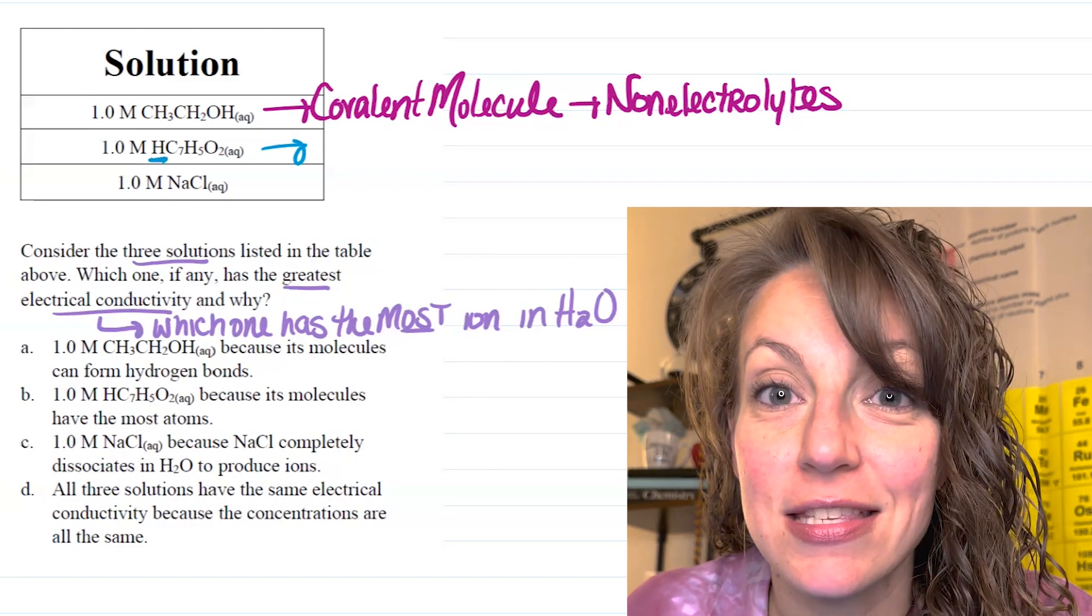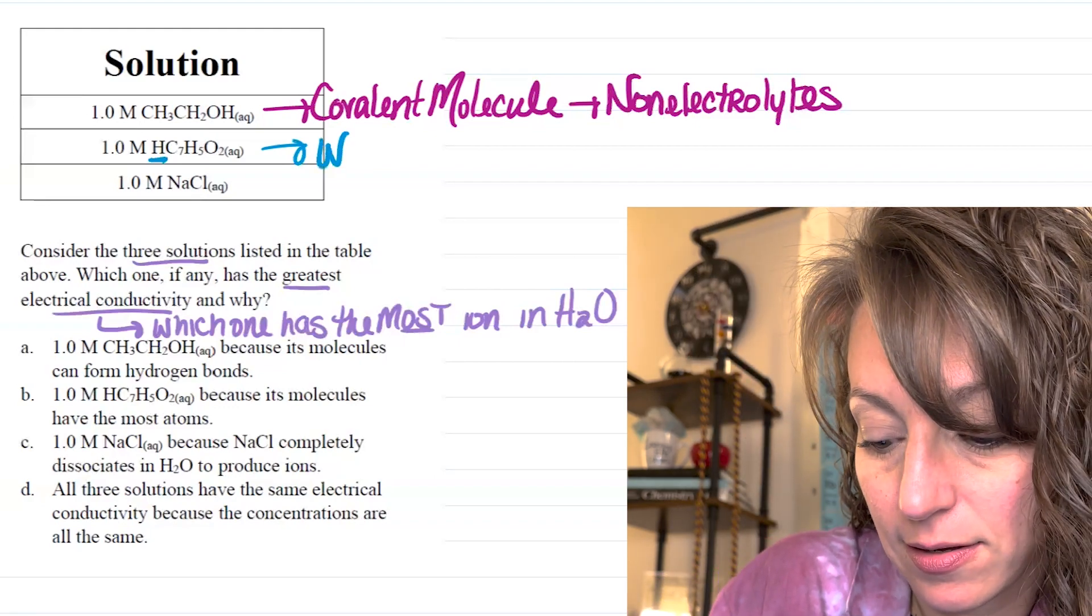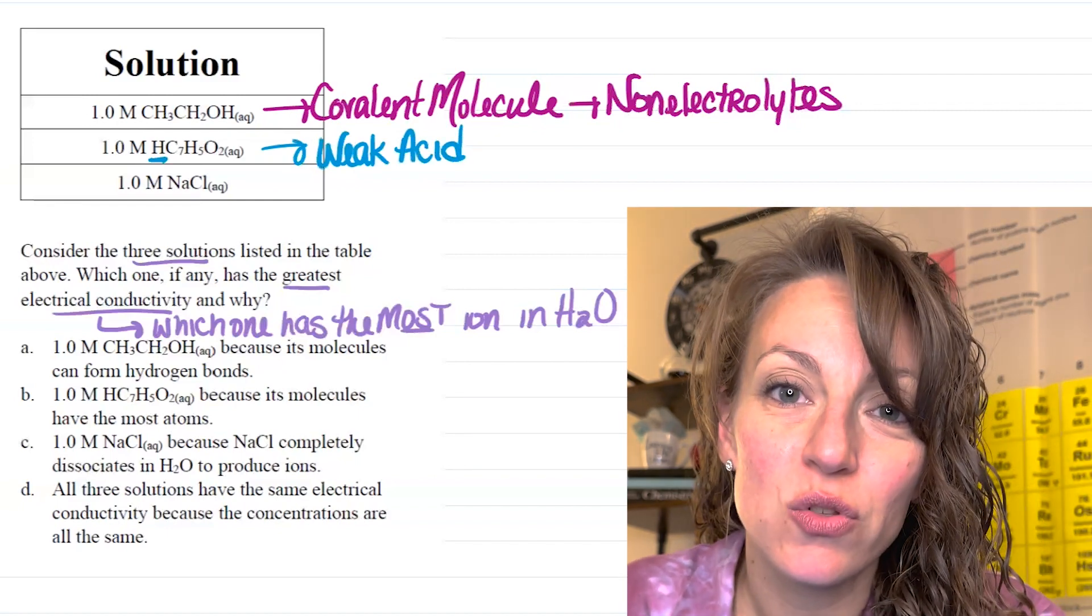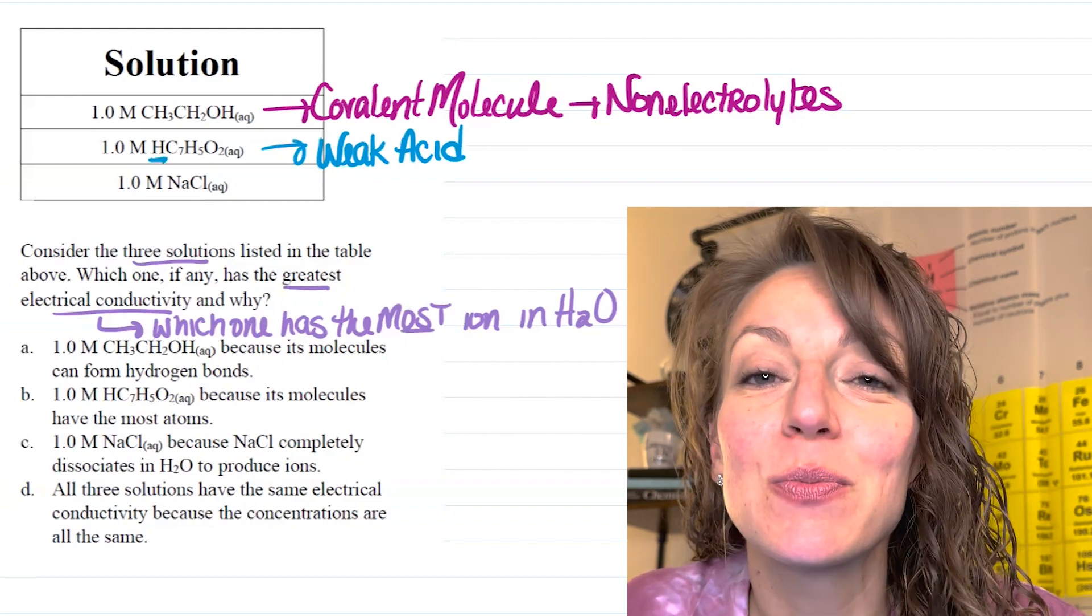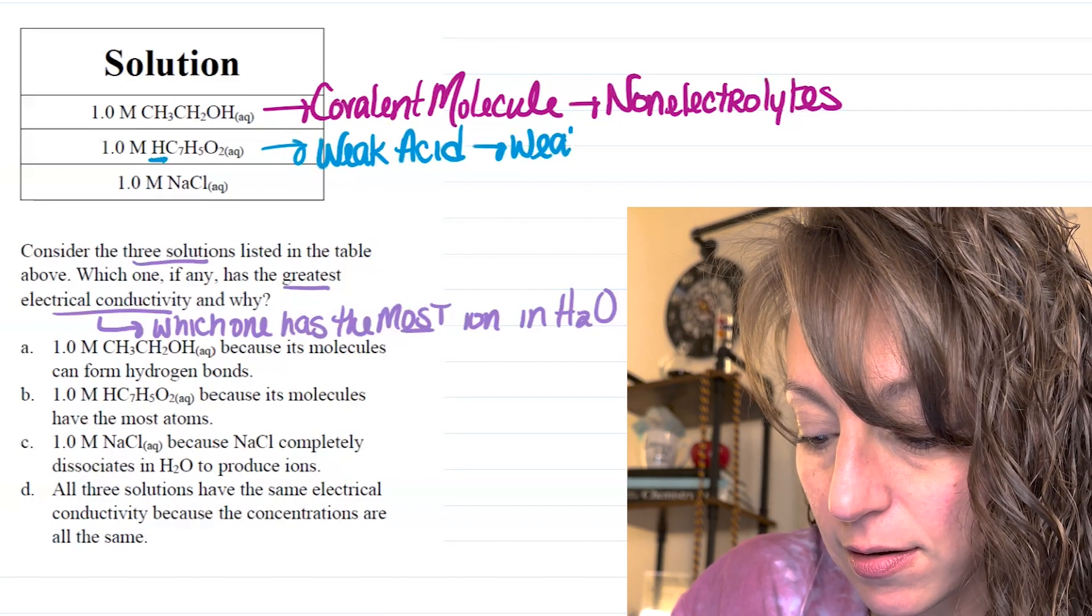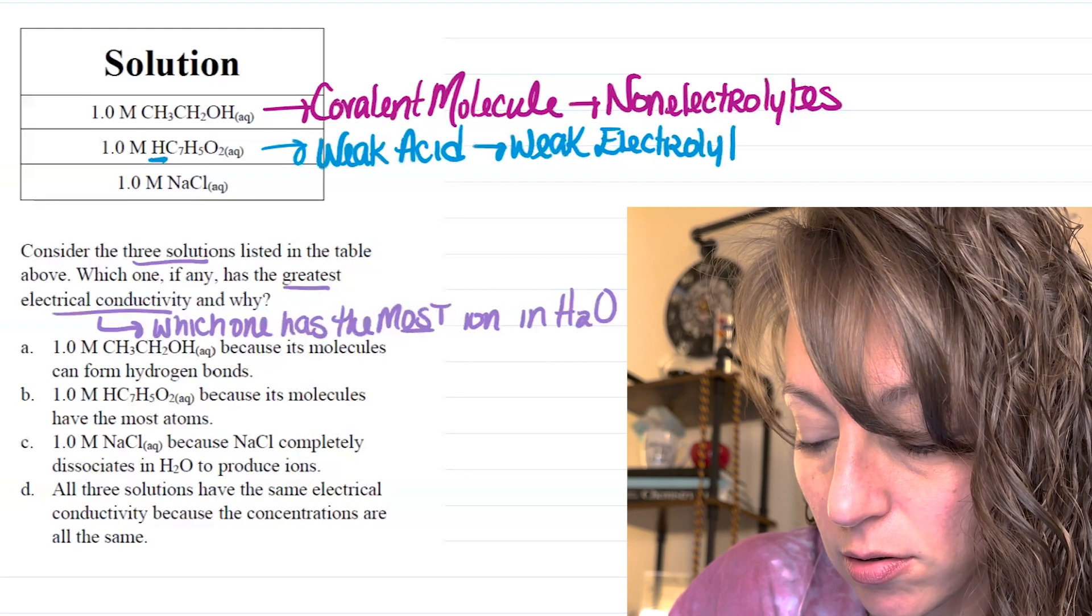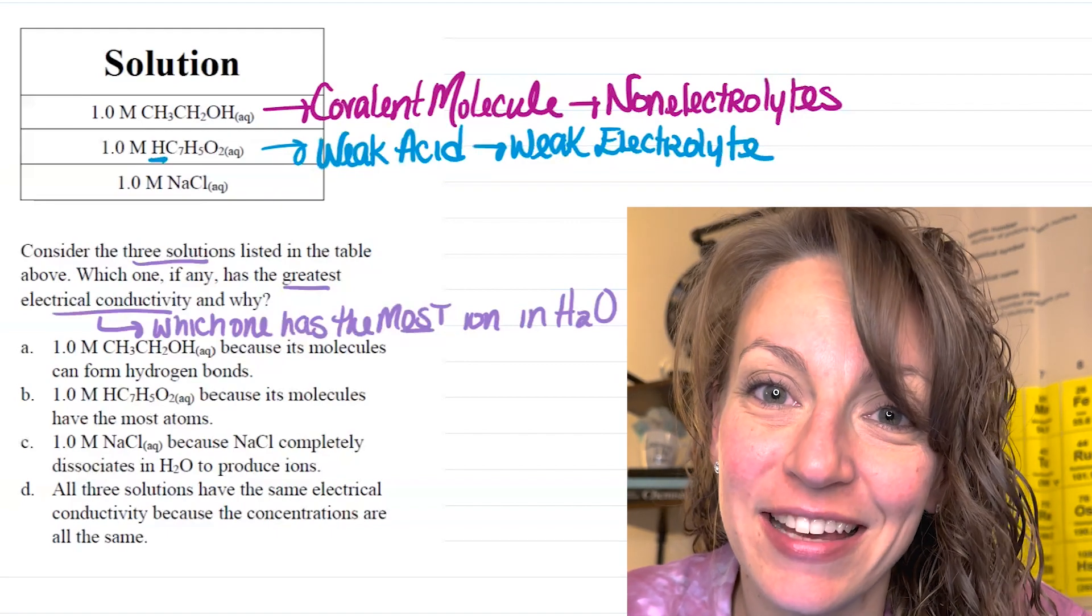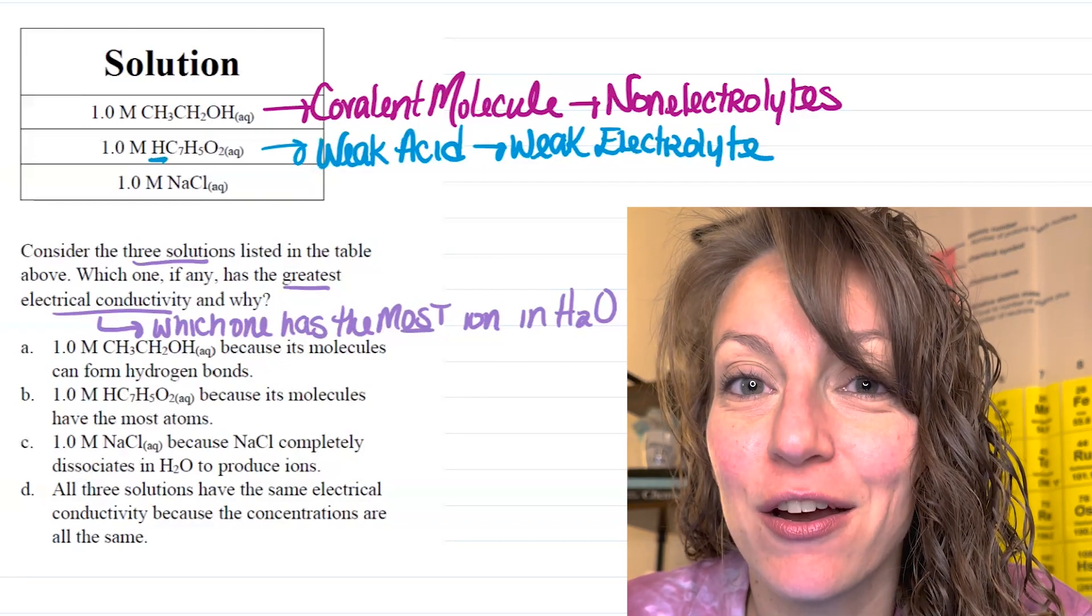Now, since it's not one of the six strong acids, it's going to be considered a weak acid. Weak acids only partially dissociate into ions when placed in water, which makes them really good weak electrolytes. Now, a weak electrolyte is going to conduct some electricity, more than a non-electrolyte will, but let's take a look at our third option.